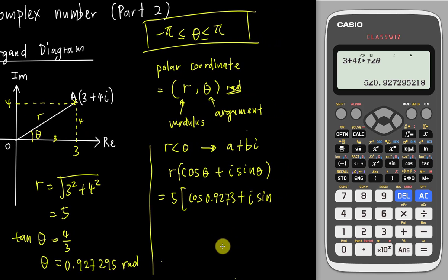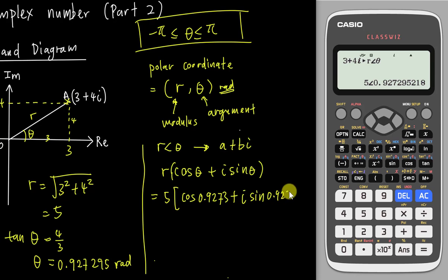Alright, so my theta is 0.9273. Then you see if I type everything like this into the calculator, 5 cos 0.9273 and then plus the i, click the i here and then this one will be sine 0.9273. Close the bracket. I type enter. You realize my real number is very close to 3. So I will just assume this is 3 and then my imaginary number is very close to 4 plus 4i.